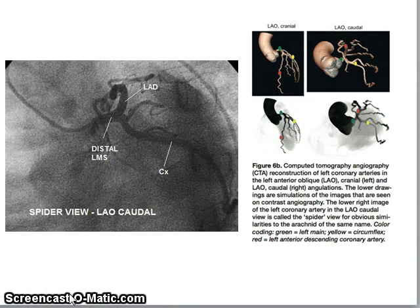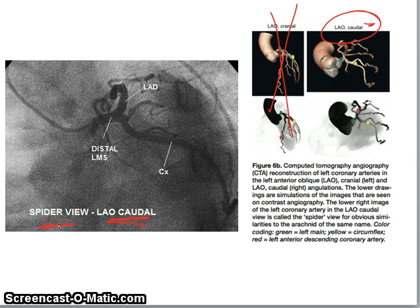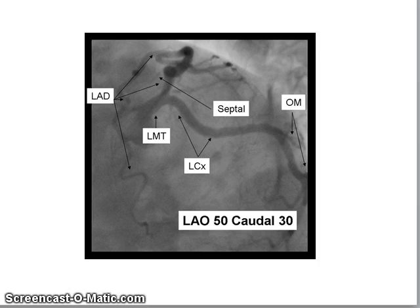Now the LAO caudal view — because it's caudal, it's best for viewing the circumflex, but the LAO caudal is also called the spider view. This view is good for the bifurcation: here's the left main coronary artery, and here's where it bifurcates into the LAD and circumflex. It gives a good picture of both the circumflex and the left main bifurcation. The CT reconstruction and labeled diagram here illustrate this well.